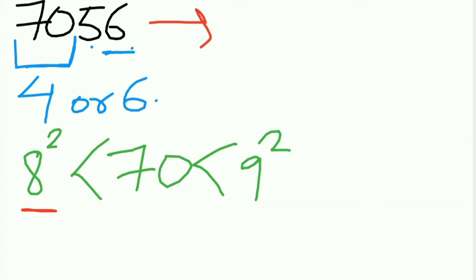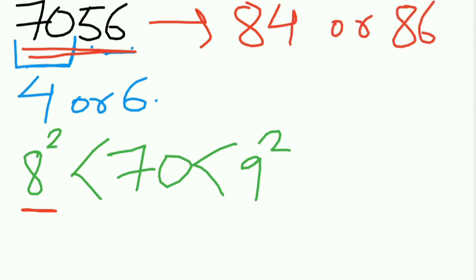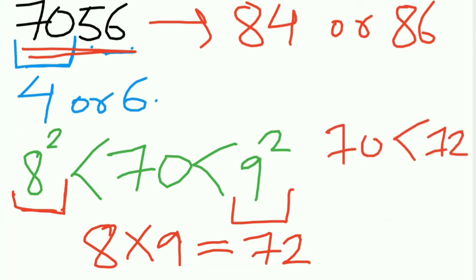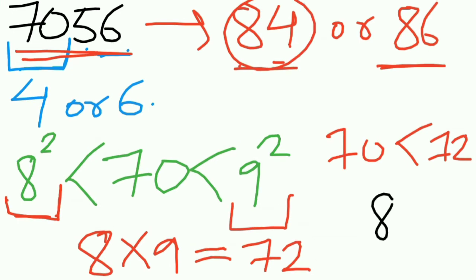As far as now we can say the square root of this number can be 84 or 86. To find out, we will take a look at the tenth digits, which are 8 and 9. Multiply these two, you will get 72, and 70 is smaller than 72. So the result will be the smallest number between these two, which is 84. Your answer will be 84.